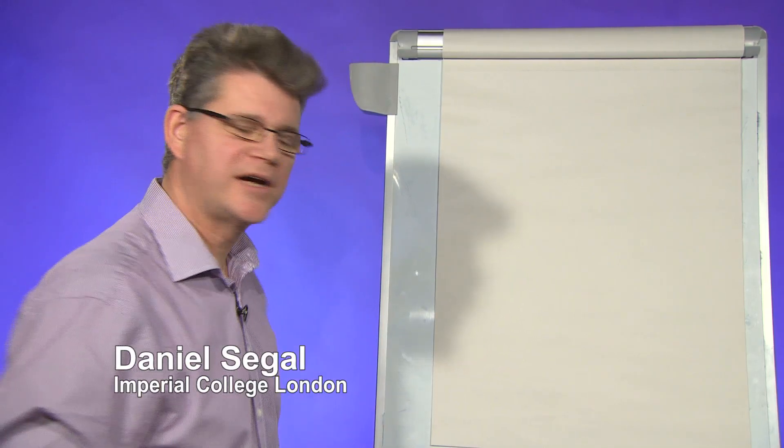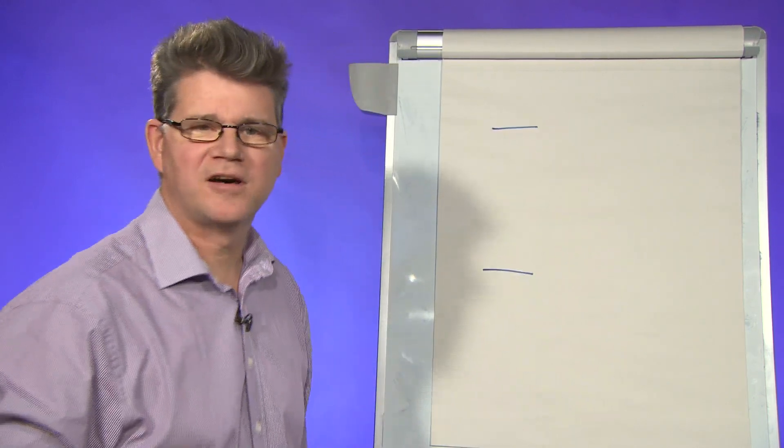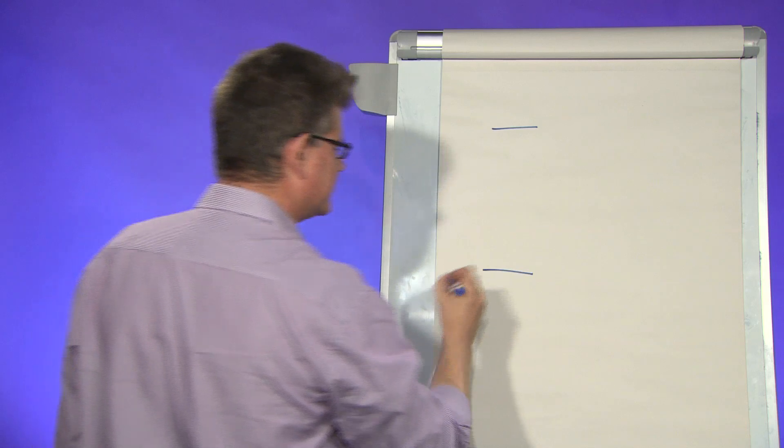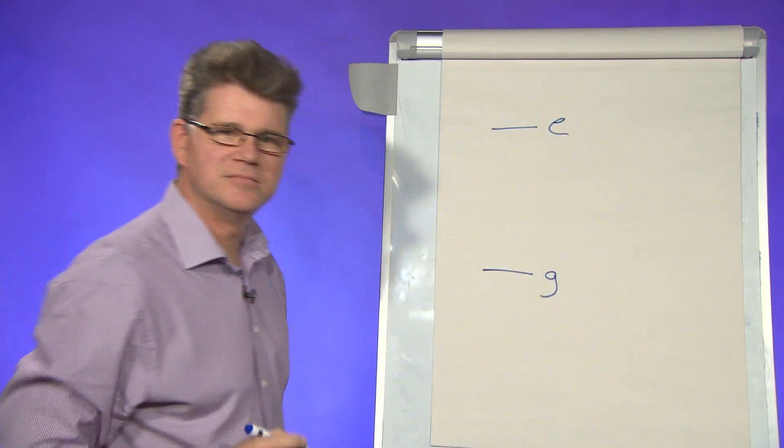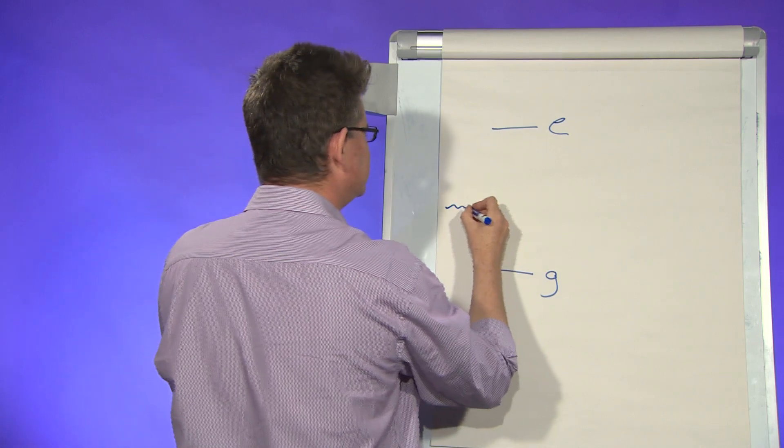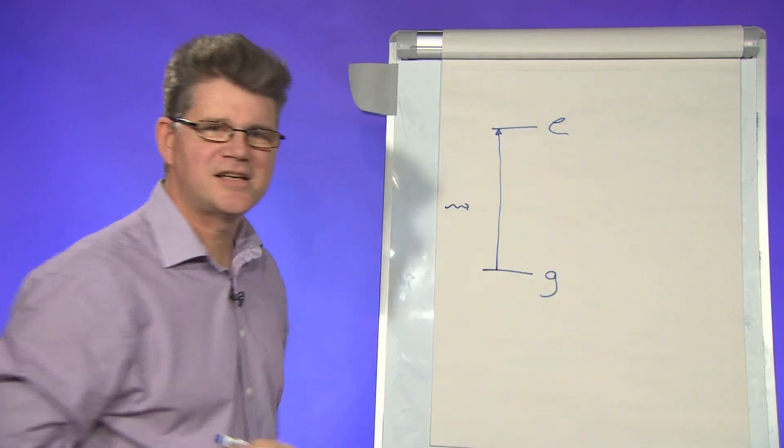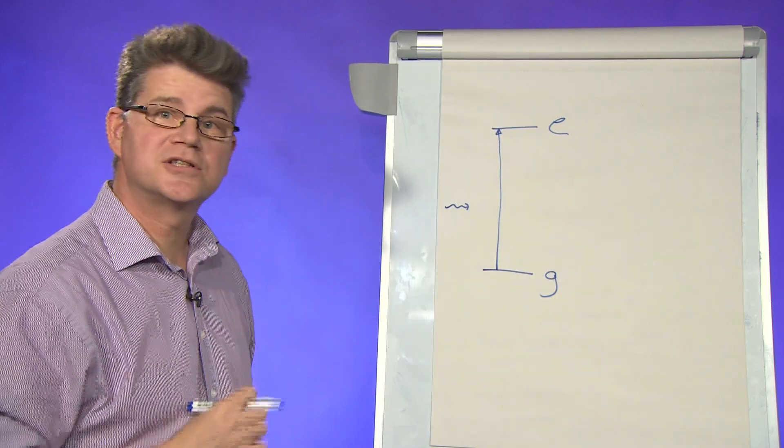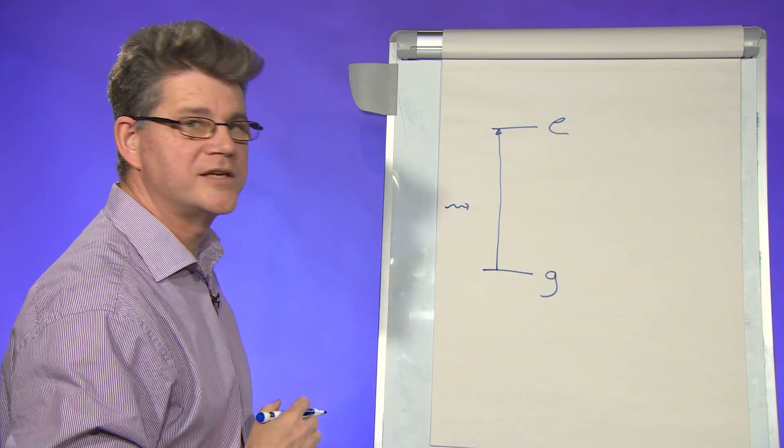Ever since Niels Bohr came up with his model for the hydrogen atom, we've had the idea of the quantum jump in our minds. The idea is that we have the ground state and the excited state of an atom, and if I shine some light in, the atom goes from the ground state to the excited state instantaneously. That's the notion of the quantum jump - that instantaneous jump from one state to another.